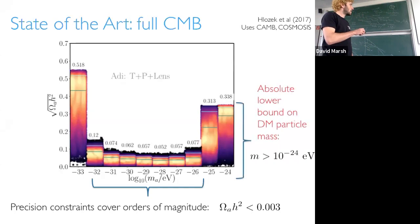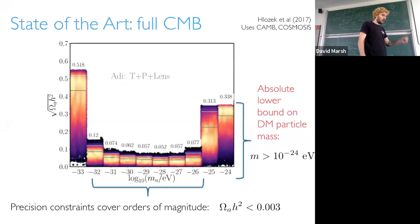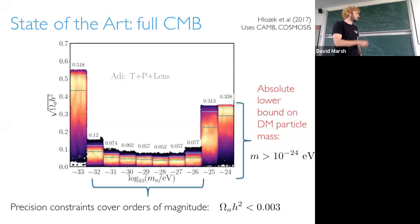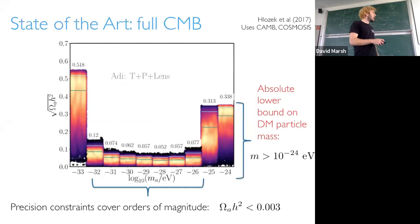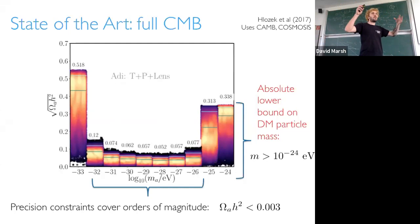The really significant thing, if you care about what is the dominant component of dark matter: the CMB gives you a really rock-solid absolute lower bound on the dark matter particle mass. Why is it rock solid? Because it's linear physics. We didn't put in any non-linear scales; we just solved linear equations given standard initial conditions. The CMB tells you that the dominant component of dark matter is heavier than 10^{-24} eV.